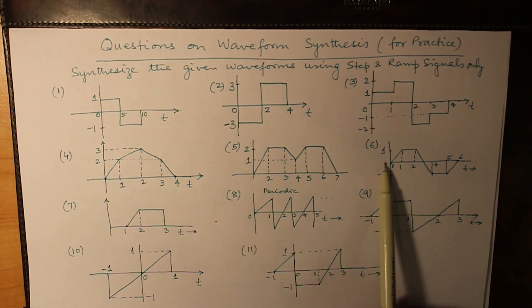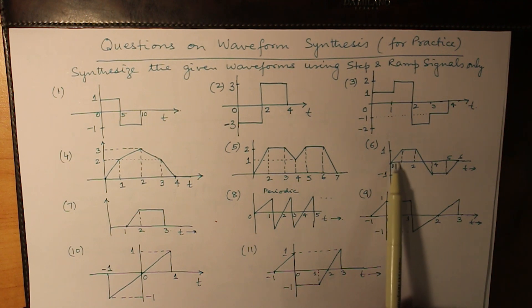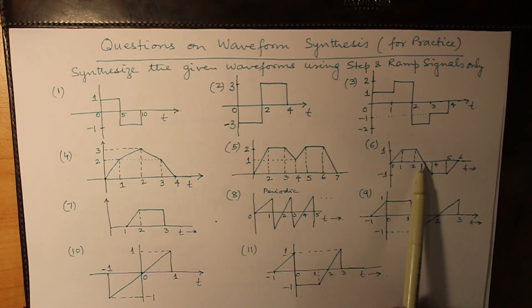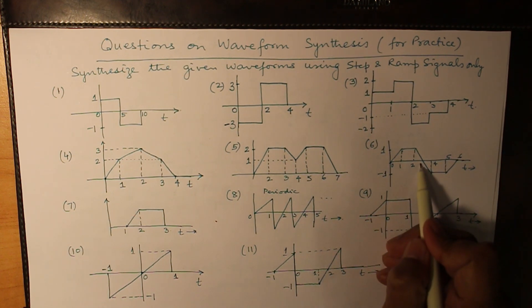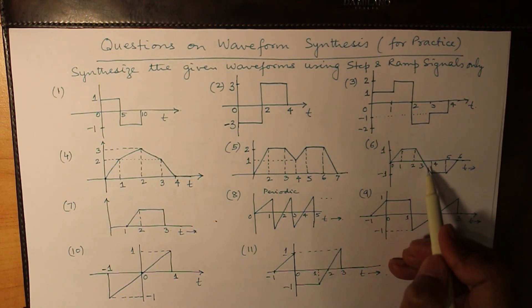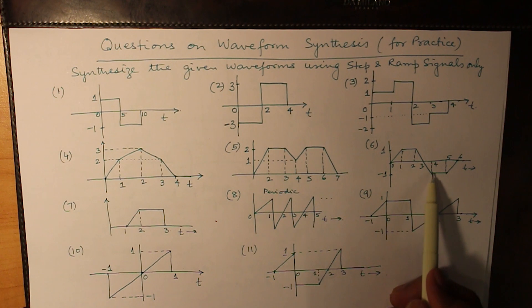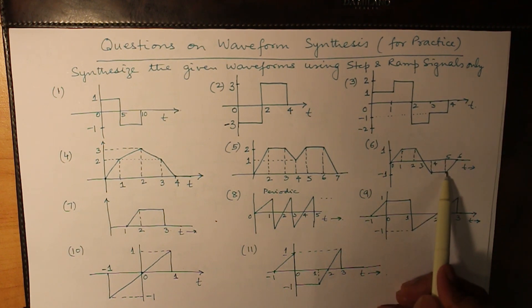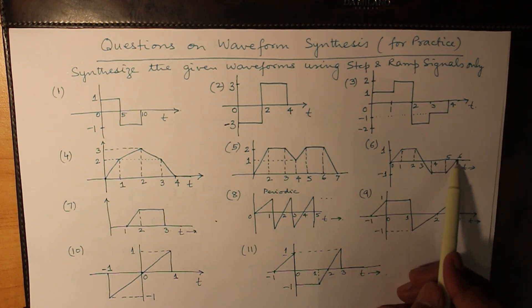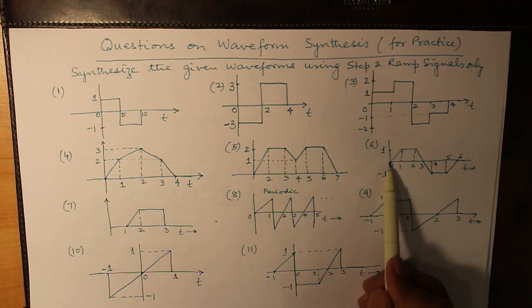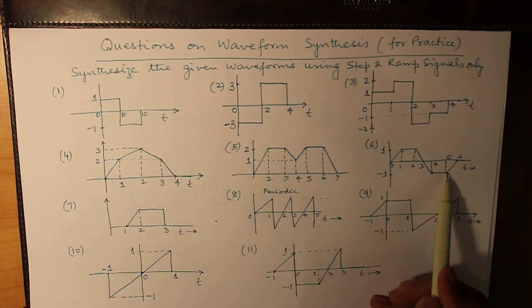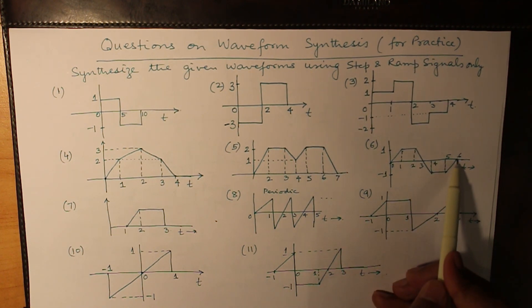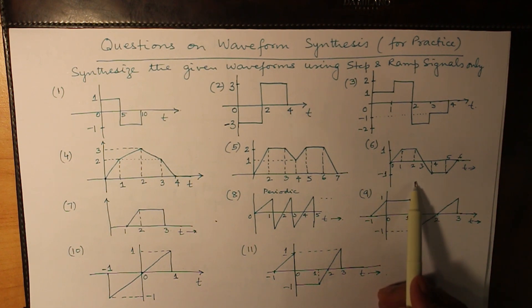For question 6: one change at t equals 0, next at t equals 1, next at t equals 2. At t equals 3 there is no change — the same slope continues downward. At t equals 4 there is a change, then at t equals 5, and again at t equals 6. So there are 6 terms in question 6.